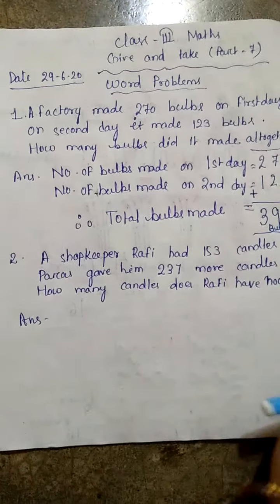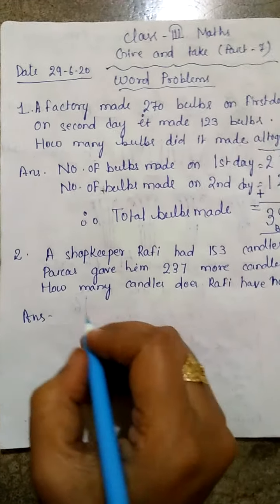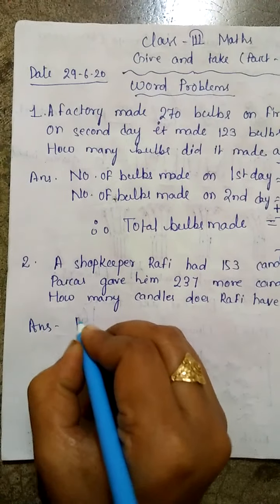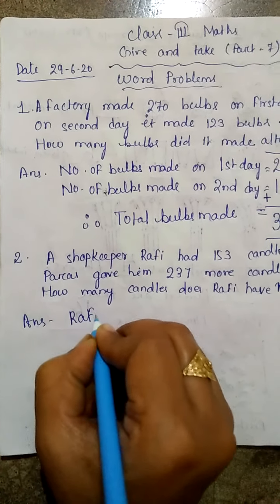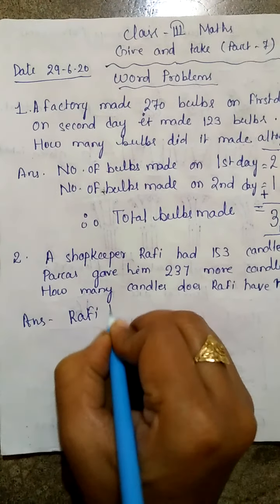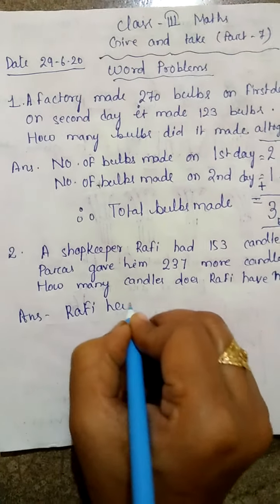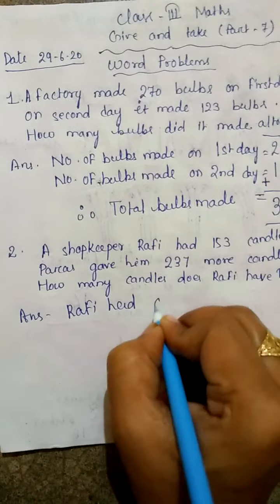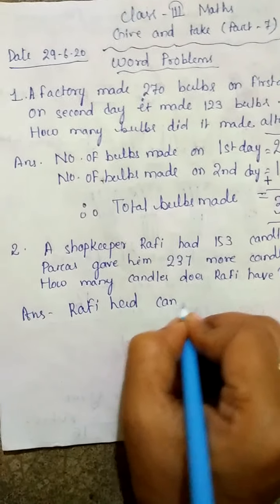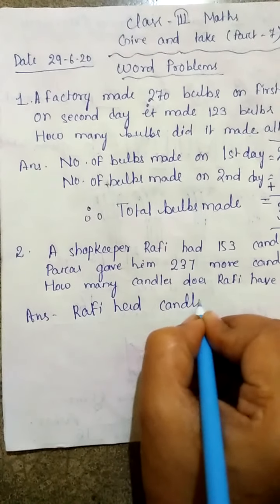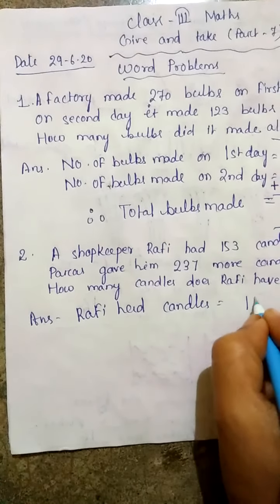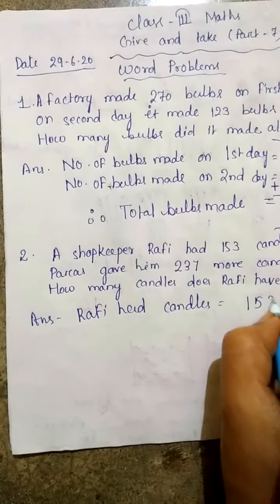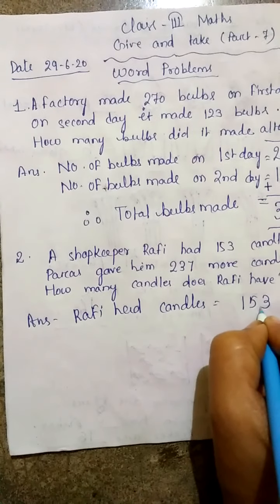इसका statement-wise हम लोग लिखते हैं। Rafi had candles is equal to 153।